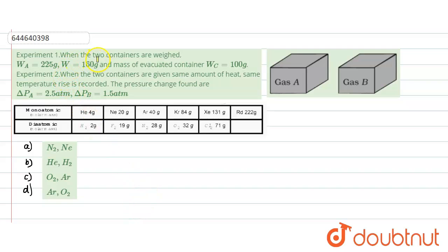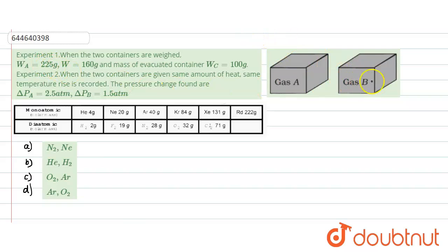In this question, two containers are weighed. WA is given as 225 grams and WB is given as 160 grams. There are two containers containing gas — gas A and gas B. We need to find which gases these are. When we measure the weight of container A plus the gas, we get 225 grams, and when we measure container B with the gas, it comes out to 160 grams.